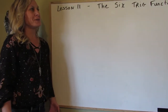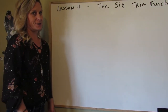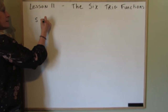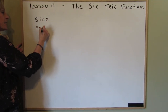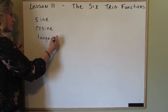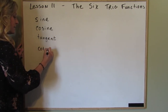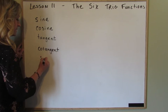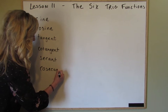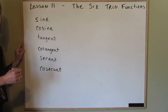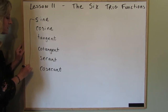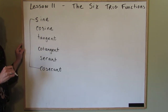In trigonometry today we're going to learn the six trig functions. We already know three: the sine, the cosine, and the tangent. Today we're going to add the cotangent, the secant, and the cosecant. Now to define what's going on here, the sine and the cosecant are reciprocals of each other.